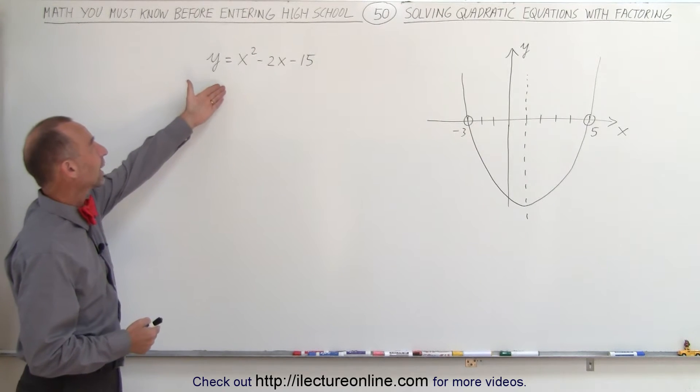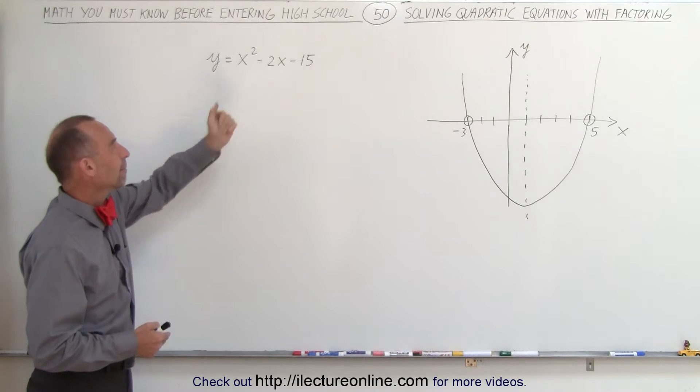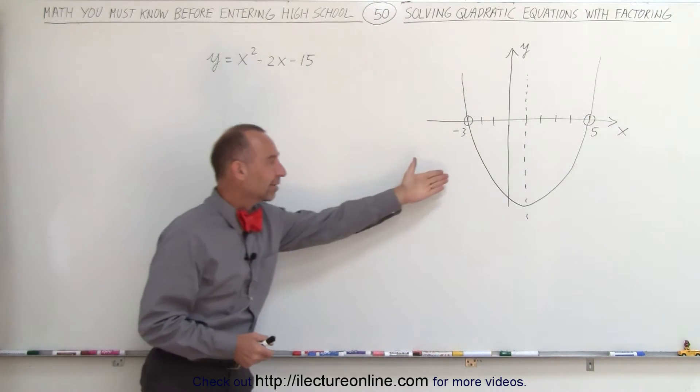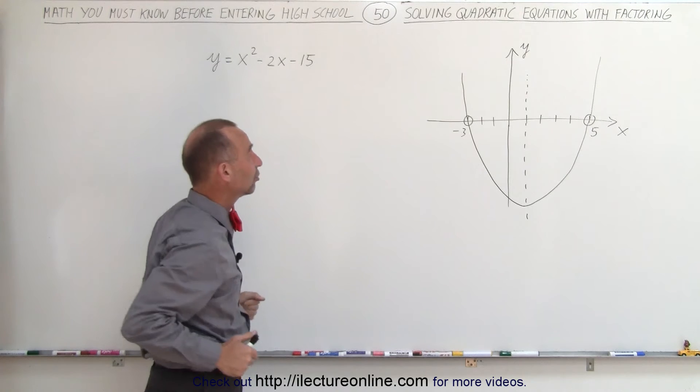Here we have the equation y equals x squared minus 2x minus 15, and on the right side we've drawn the graph that represents this equation.